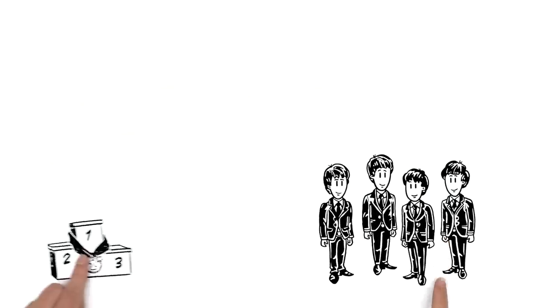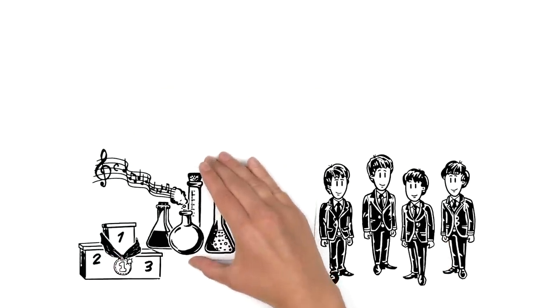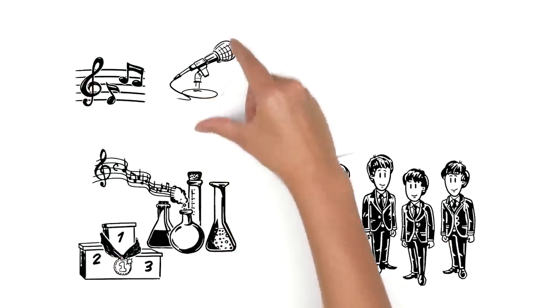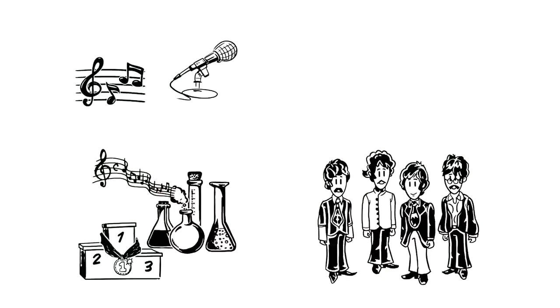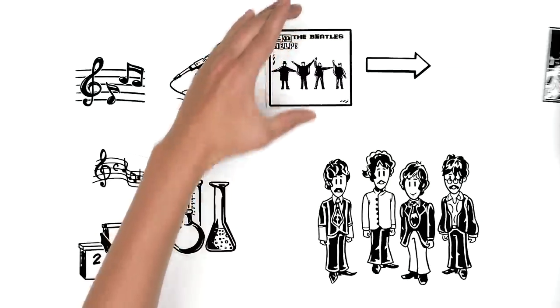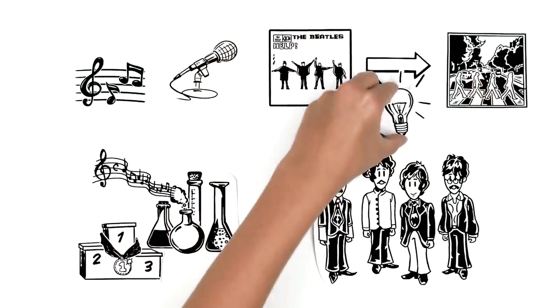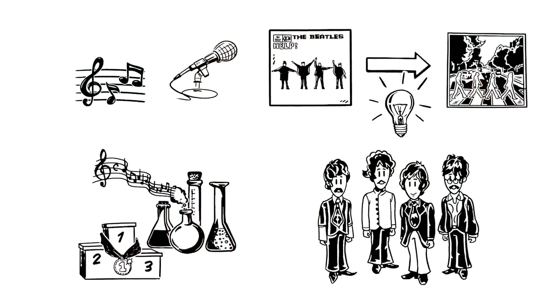The Fab Four stayed on top during the rest of the decade by experimenting with songwriting, recording and their visual style. By moving from sweet pop to avant-garde rock, they always kept reinventing themselves and stayed on the cutting edge.